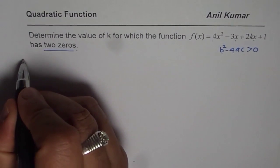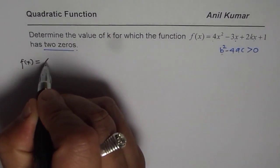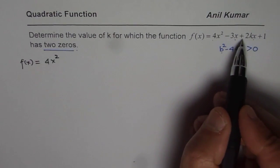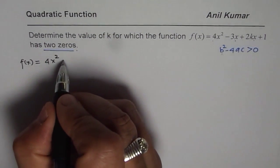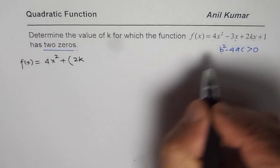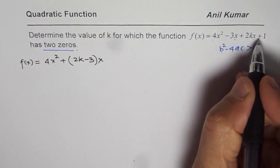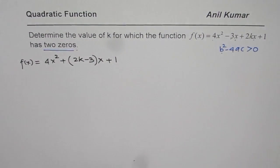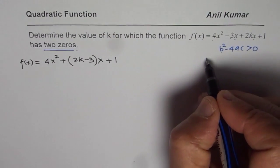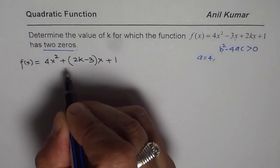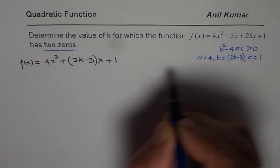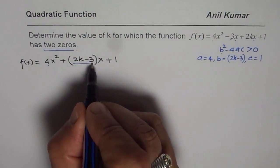So f(x) equals 4x squared, and what I will do here is take x common from the x terms. So if I take x common, I get plus 2k minus 3 times x plus the constant 1. Now we can clearly read what a, b, and c are: a equals 4, b equals 2k minus 3, and c equals 1.